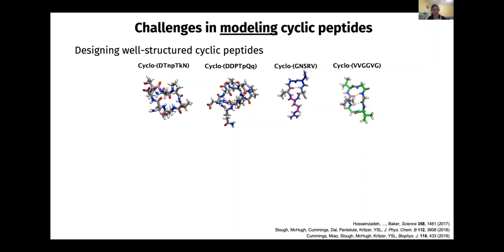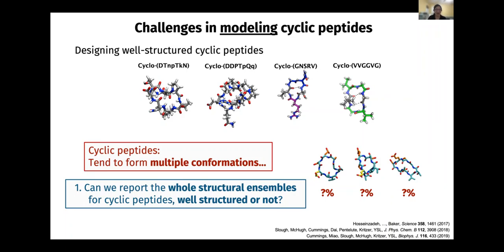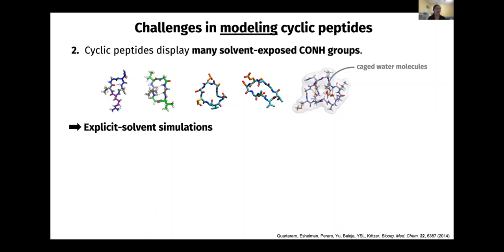However, most cyclic peptide sequences are not going to be well-structured — they're going to be a mess. So what we want to do is report the whole structure ensemble for cyclic peptides, whether they are well-structured or not. The second challenge: when we look at a big protein, it tends to form alpha helices and beta sheets, which buries the backbone NH groups. But for cyclic peptides, they are so tiny they can't satisfy all the intramolecular hydrogen bonds — you see a lot of solvent-exposed CONH groups, and in some extreme cases even caged water molecules within the cyclic peptide.